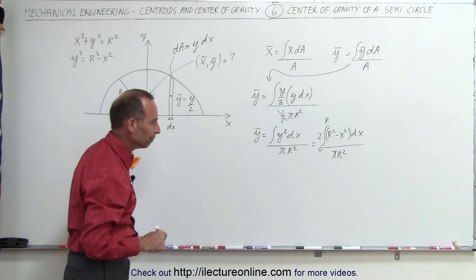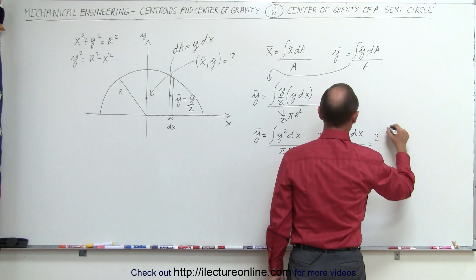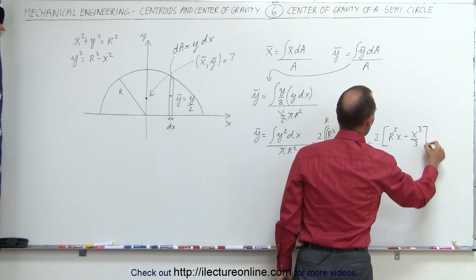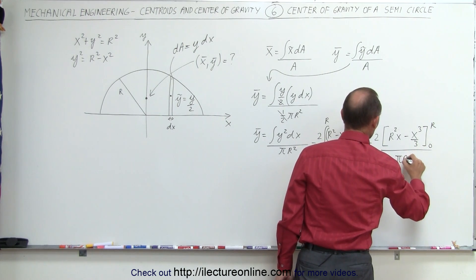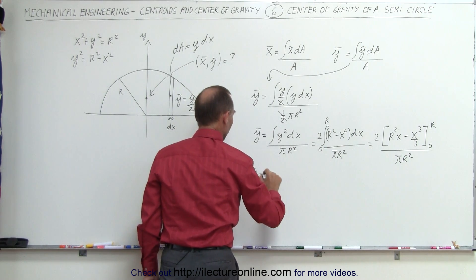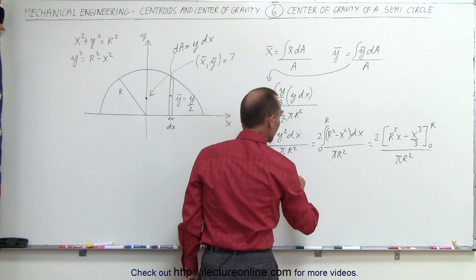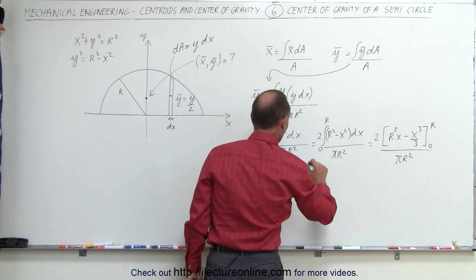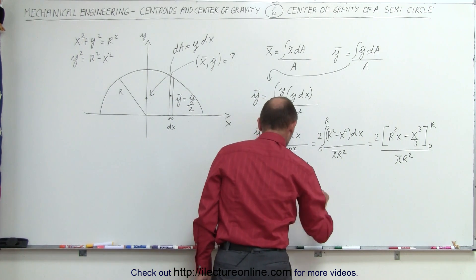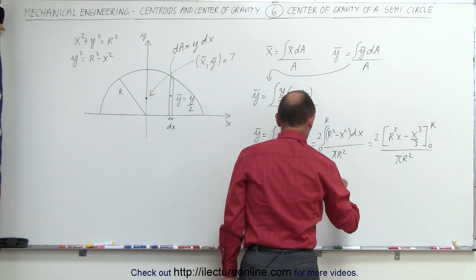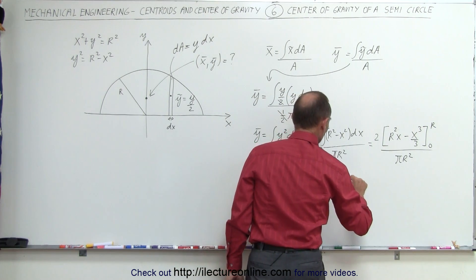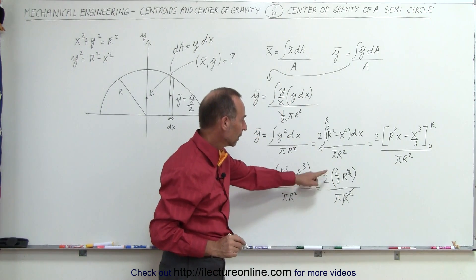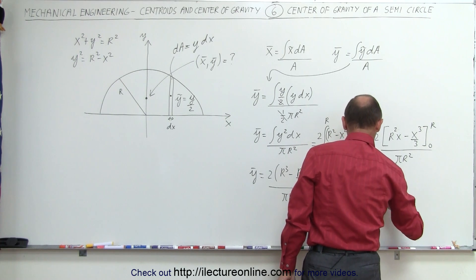I always like to have a 0 in the limits if possible. So integrating, this is equal to 2 times r squared x minus x cubed over 3, with limits from 0 to r, divided by pi r squared. Plugging in the upper limit, we get 2 times r squared times r, which is r cubed, minus r cubed divided by 3. Plugging in the lower limit gives 0. So this equals 2 times r cubed minus one-third r cubed, which is two-thirds r cubed, divided by pi r squared. The r squared cancels two powers of r, giving us 4r divided by 3 pi.